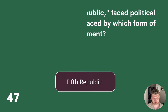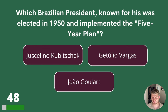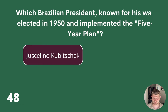Question 48. Which Brazilian president was elected in 1950 and implemented a five-year plan? The options are Juscelino Kubitschek, Getúlio Vargas or João Goulart. The answer is Juscelino Kubitschek.